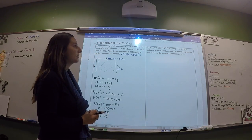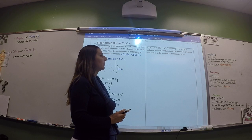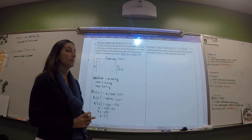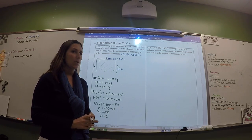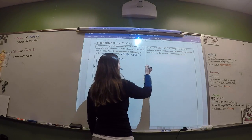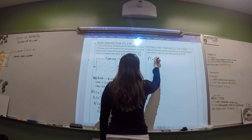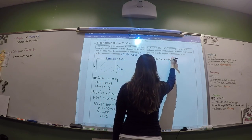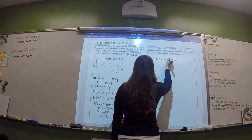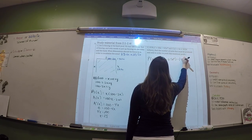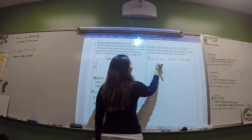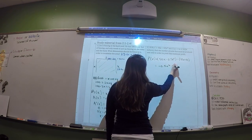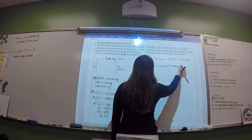The next problem gives you revenue and cost and wants you to find the number of units that must be produced and sold in order to yield the maximum profit. Same approach — profit equation, derivative, maximize. You find the profit by taking revenue and subtracting cost. So that's going to be 46X, minus 10.